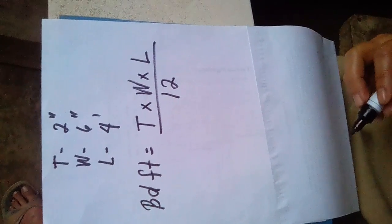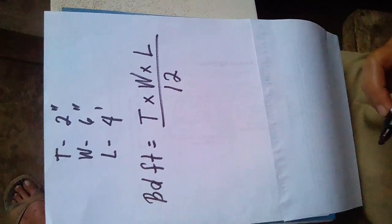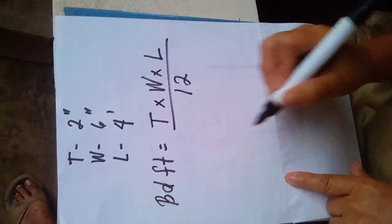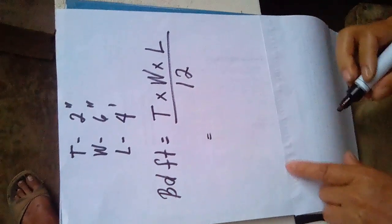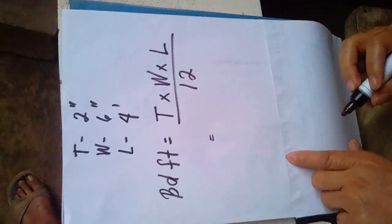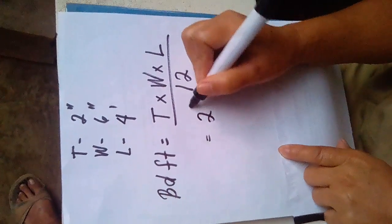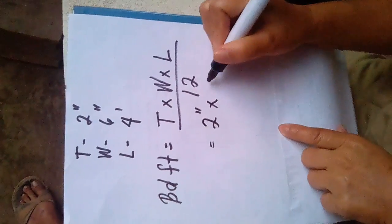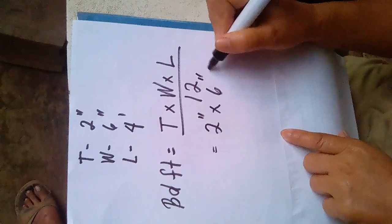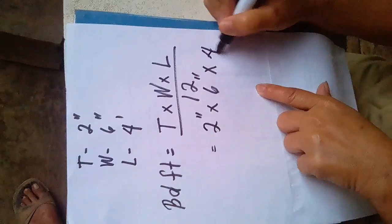The next step is to substitute your data into your formula. The thickness of my lumber is 2 inches, the width is 6 inches, and the length is 4 feet.